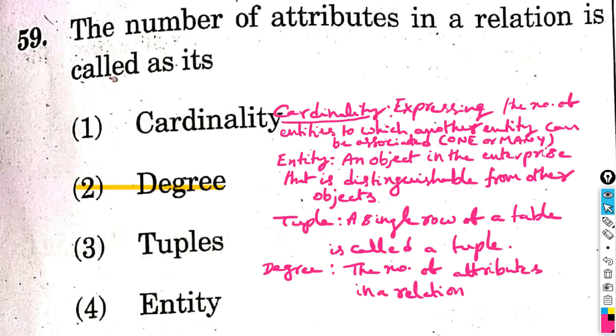This is from 2019. 9th question answer with explanation. The number of attributes in a relation is called as its: